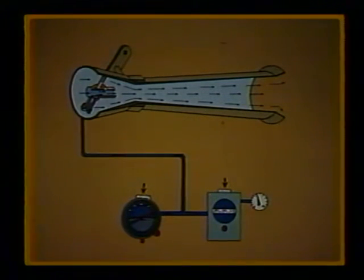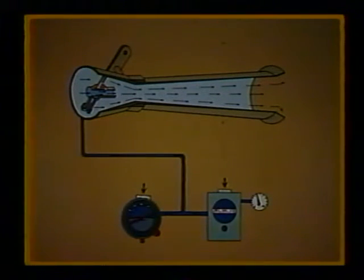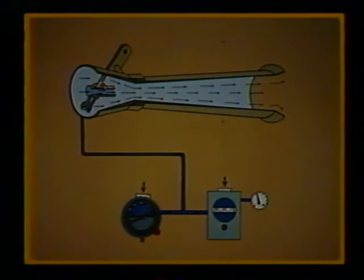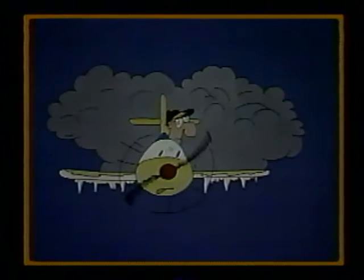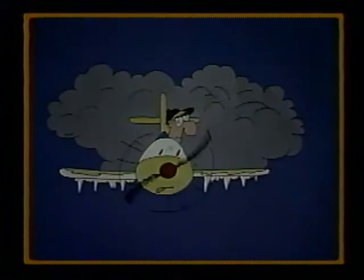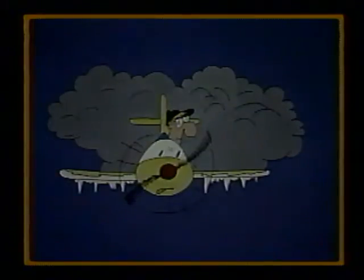Crude gyro instruments were simply spun by a stream of air flowing over buckets cut in a rotating wheel. In some models, airflow was accomplished by evacuating the gyro case using venturi tubes located on the outside of the aircraft. But when flying in adverse weather, these venturis are susceptible to icing, making them impractical for the conditions where these instruments are needed most.